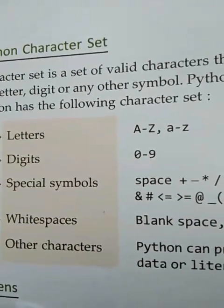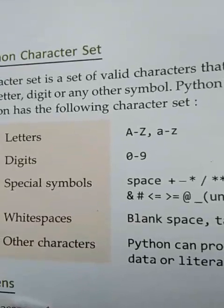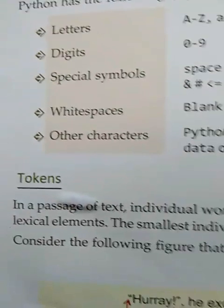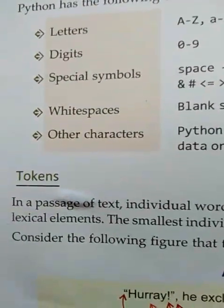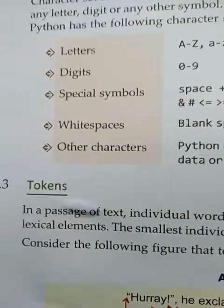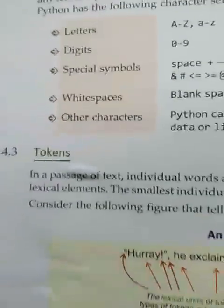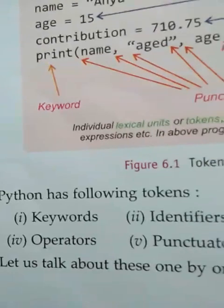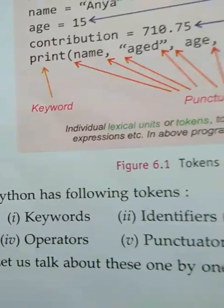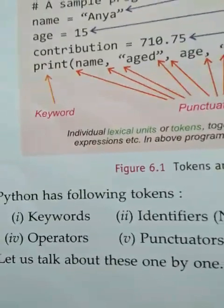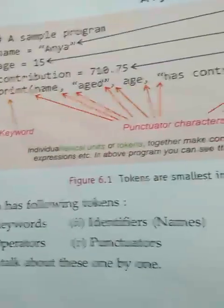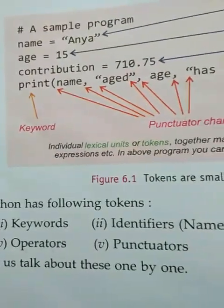The next most important topic is token. A token is the smallest part of a Python program. Tokens may be a keyword, identifier, literal, operator, and punctuator. In every language there are these five types of tokens: keywords, identifiers, literals, operators, and punctuators.